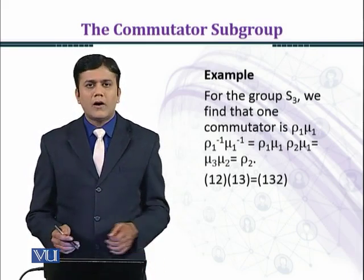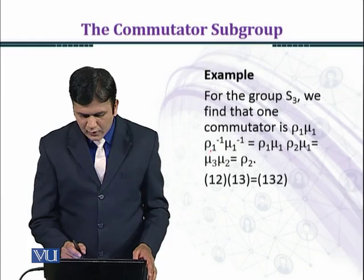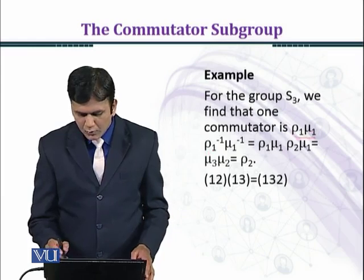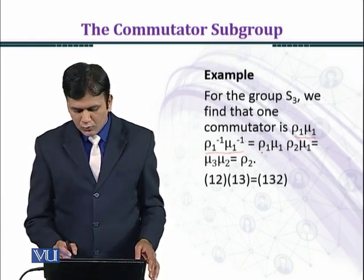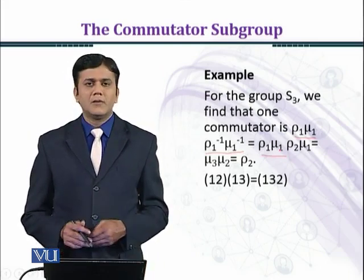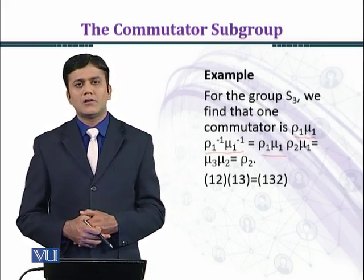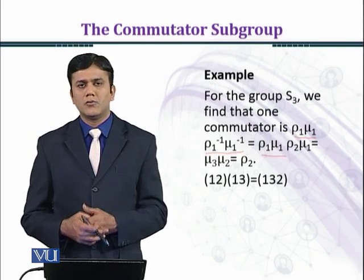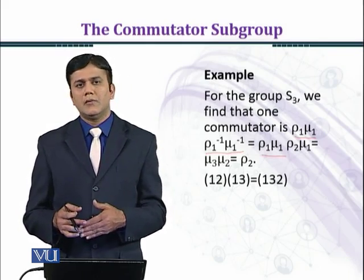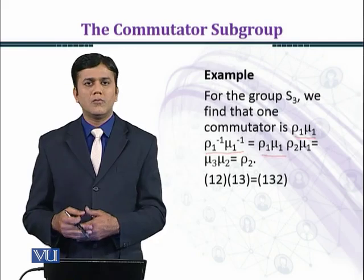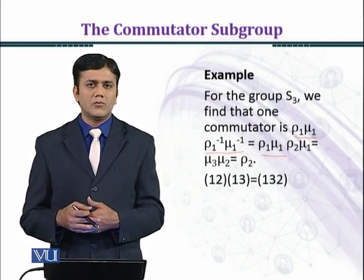We want to find the commutators in S3. We first consider the commutator rho1 * mu1 * rho1_inverse * mu1_inverse. We know that rho1 and rho2 are inverses of each other, so rho1_inverse = rho2 and rho2_inverse = rho1. For mu1, mu2, mu3, each element is its own inverse: mu1_inverse = mu1, mu2_inverse = mu2, mu3_inverse = mu3.